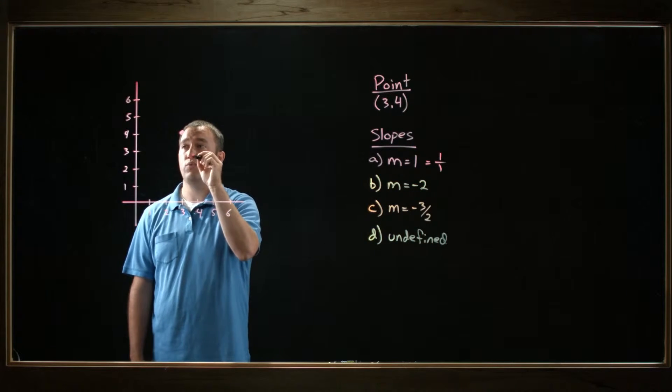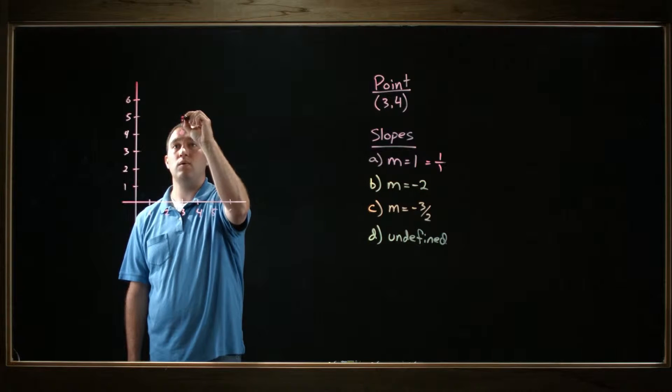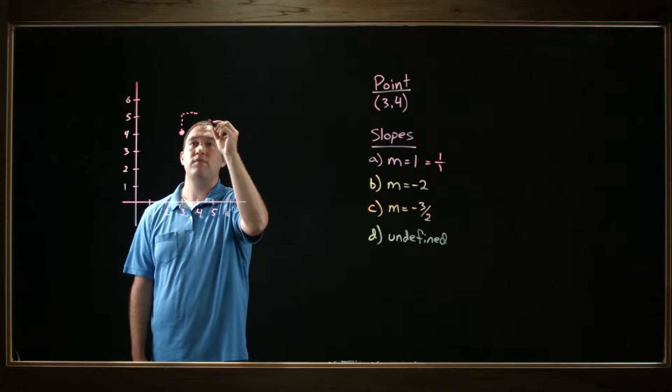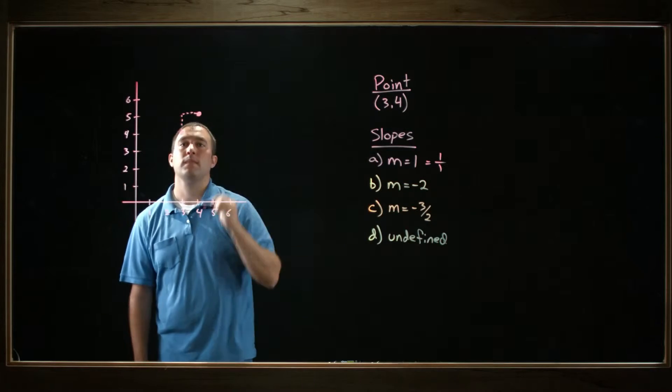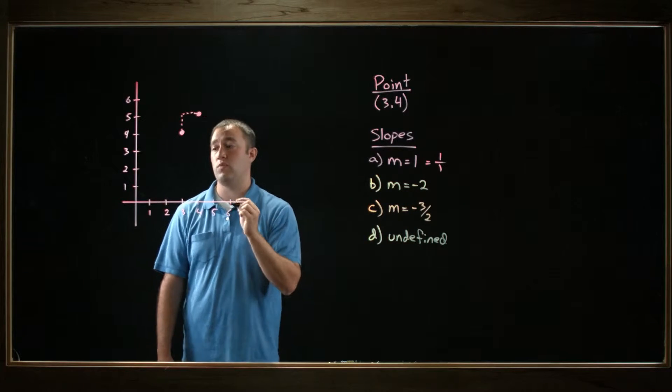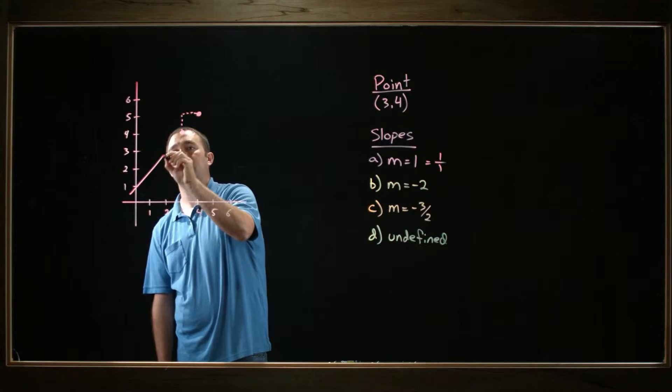So from the point (3, 4), I can go up right here 1, and over 1, to this point (4, 5). And I've got that one right there. Then I draw a straight line that connects them, and I'll have a line with a slope of 1. That looks something like this.